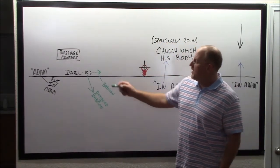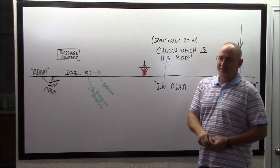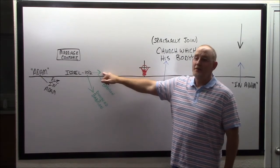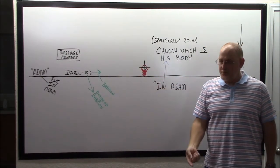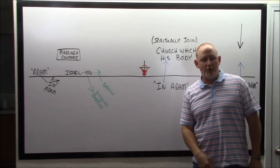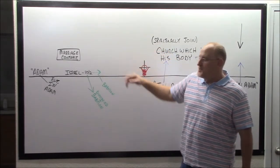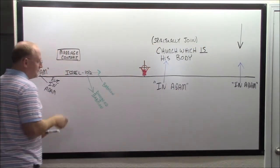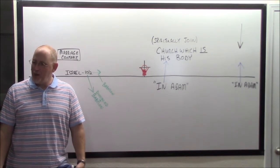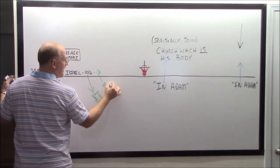When God divorces the ten northern tribes, the two southern tribes go forward. About 120 years later, what happens to the two? They do the exact same thing. So God sends them to Babylon. But when he sent the ten tribes to Babylon, he divorced them. When he sends the two tribes into Babylon, is there any word about divorce? He doesn't divorce them.